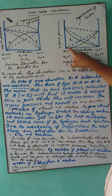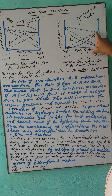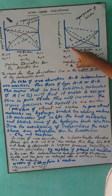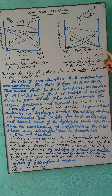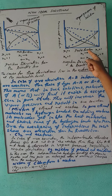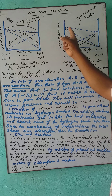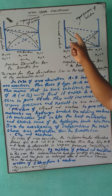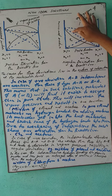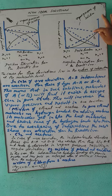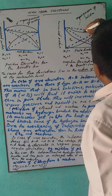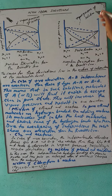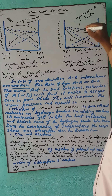As the mole fraction increases, the vapor pressure decreases, shown by a downward curve for component two. As x₂ increases, vapor pressure decreases, indicated by this downward curve — showing a decrease in the vapor pressure of the solution.